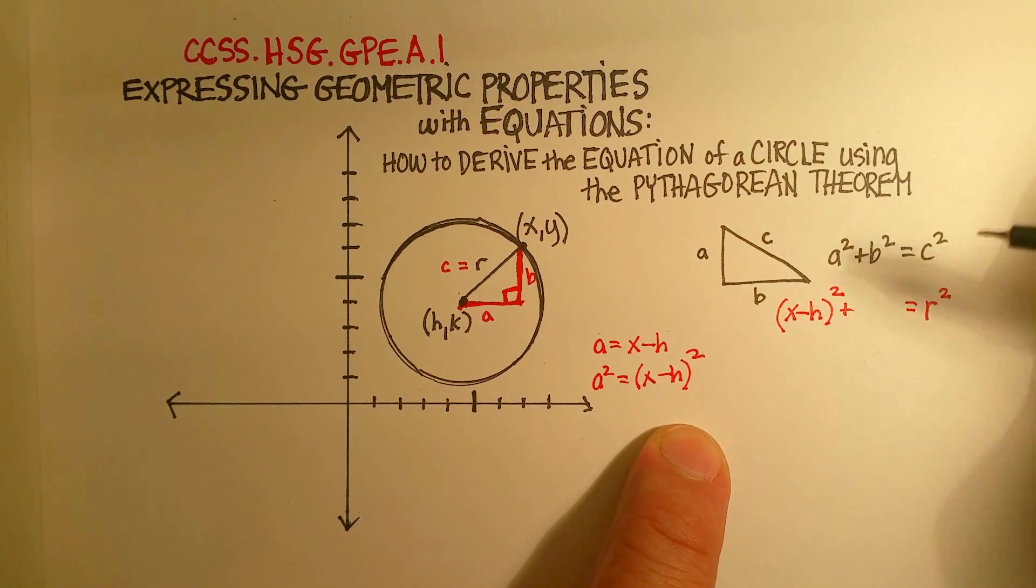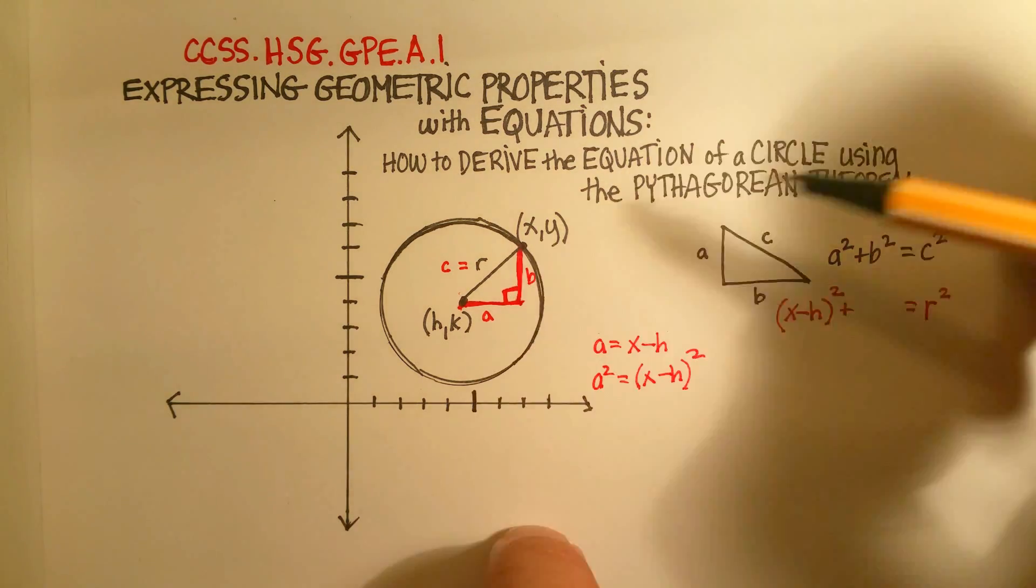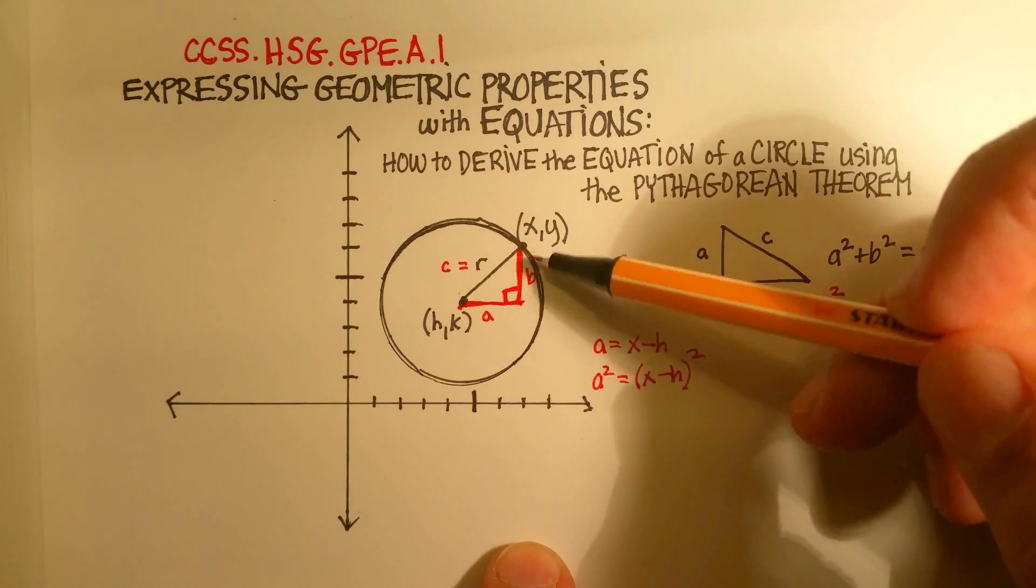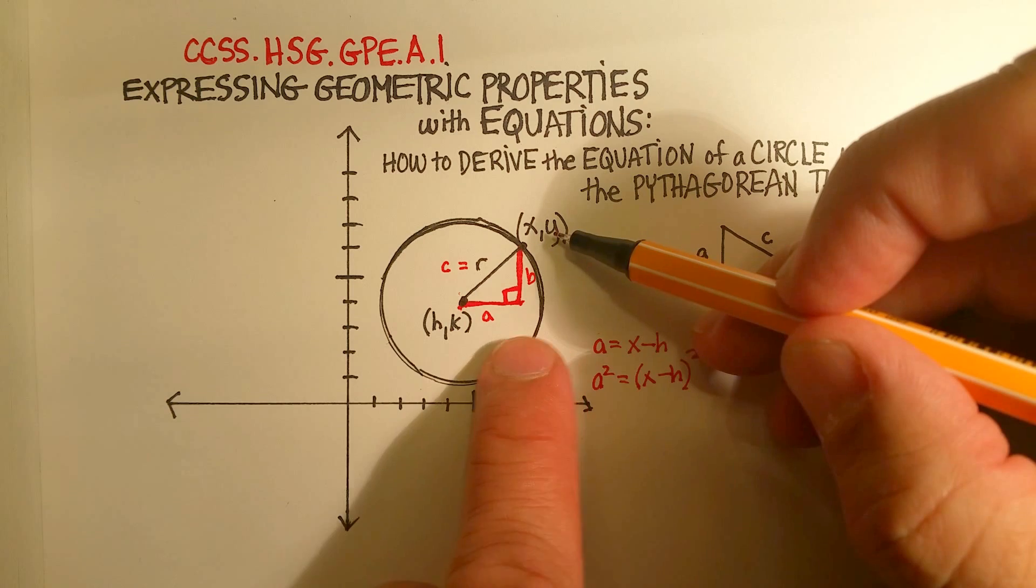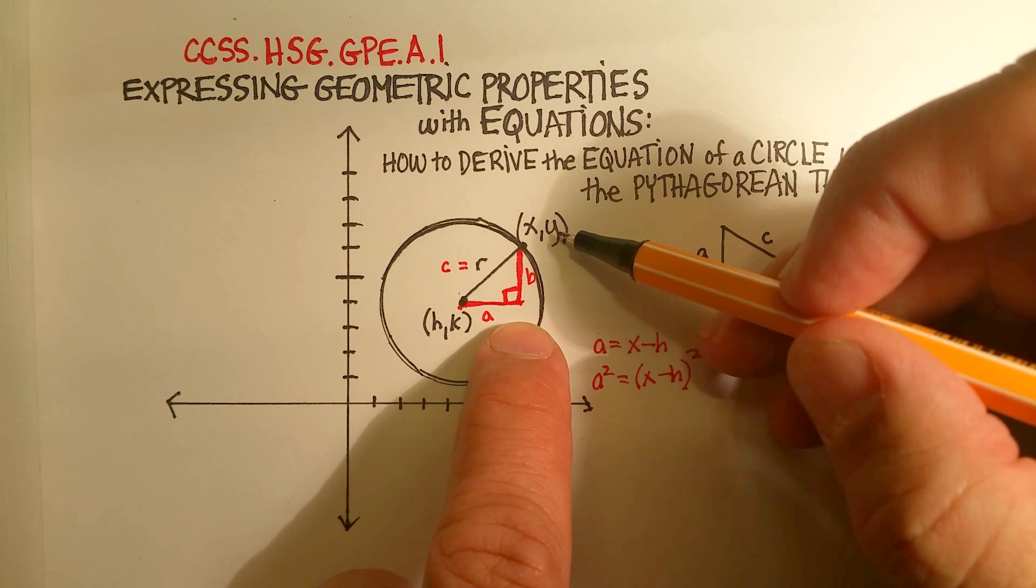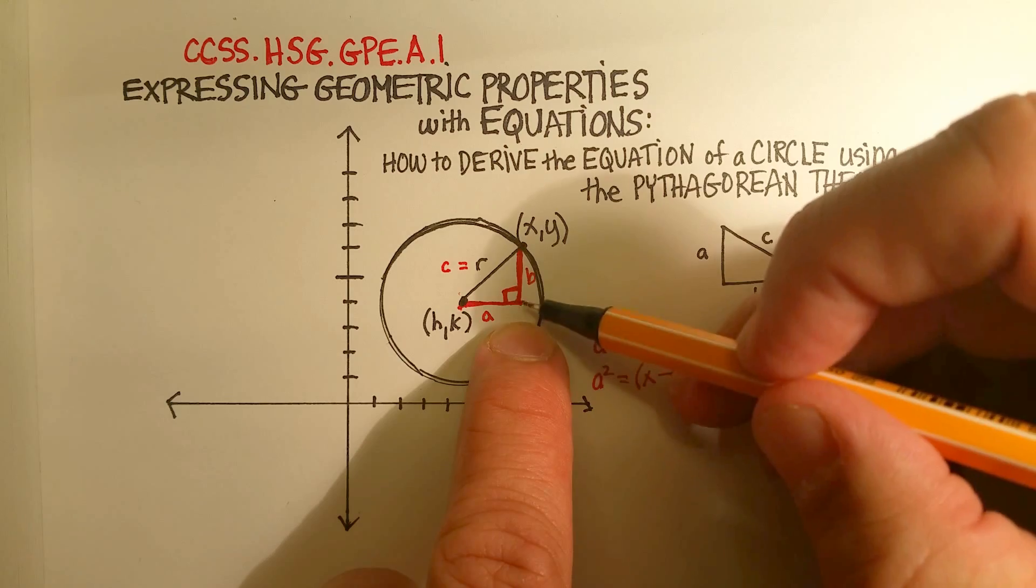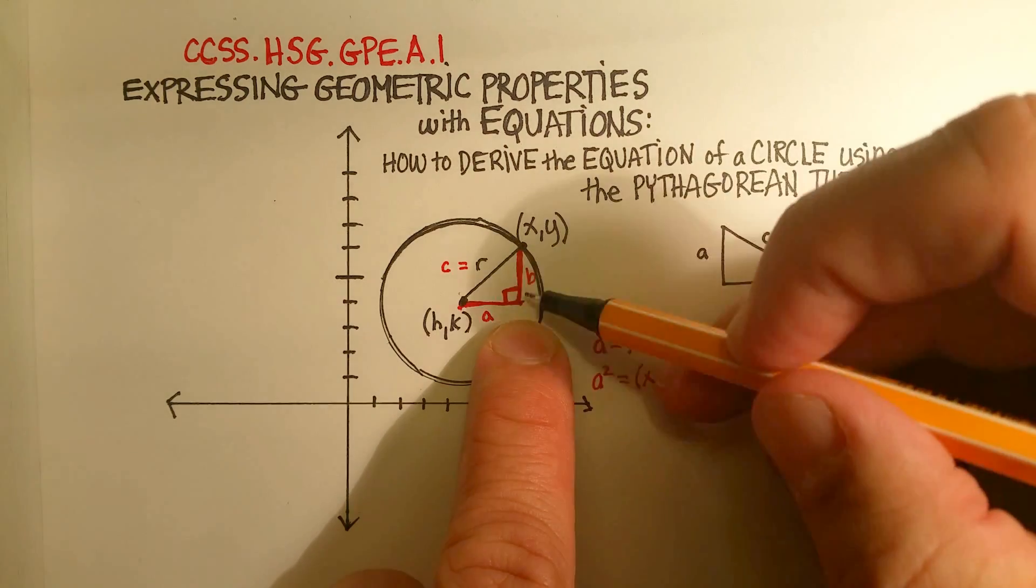Now we're going to do the exact same thing with b, or the y value. We know that b, this distance here, equals this y minus this y. So we're going to say y minus k.